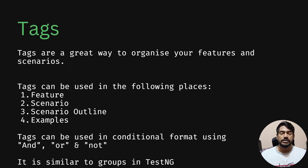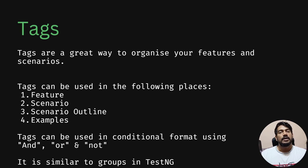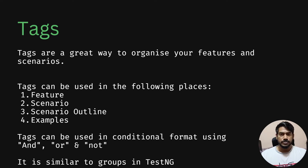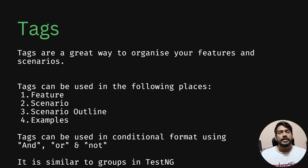If you look at the runner file, you will see something like 'slash features'. In this folder, all feature files will be run. But if you want to target specific scenarios, you will use Tags in Cucumber.